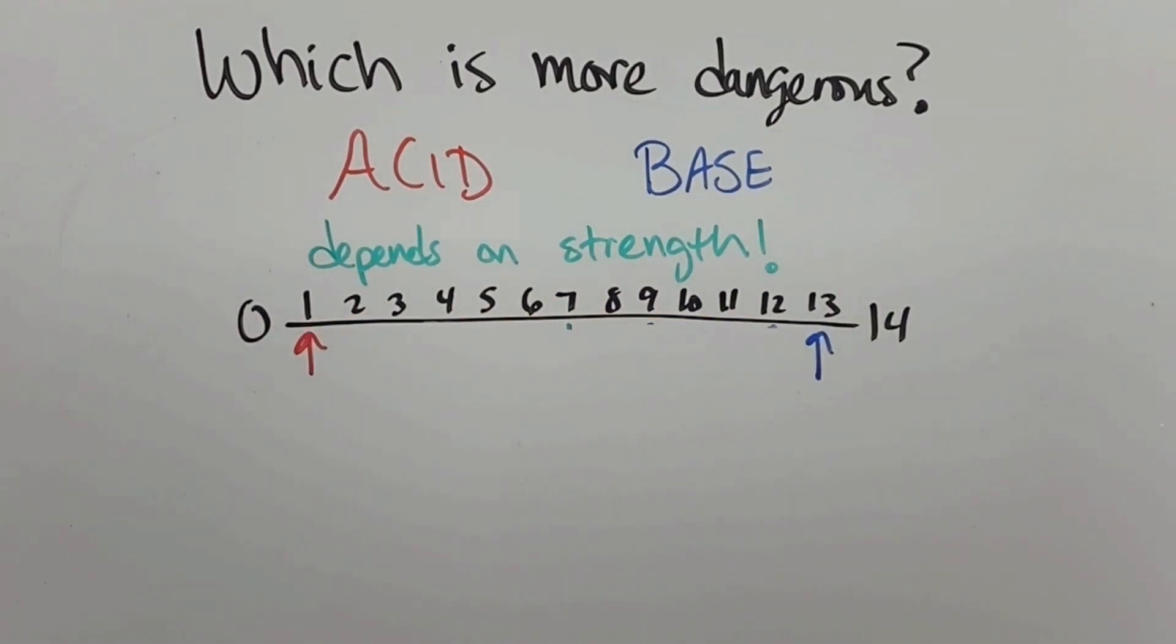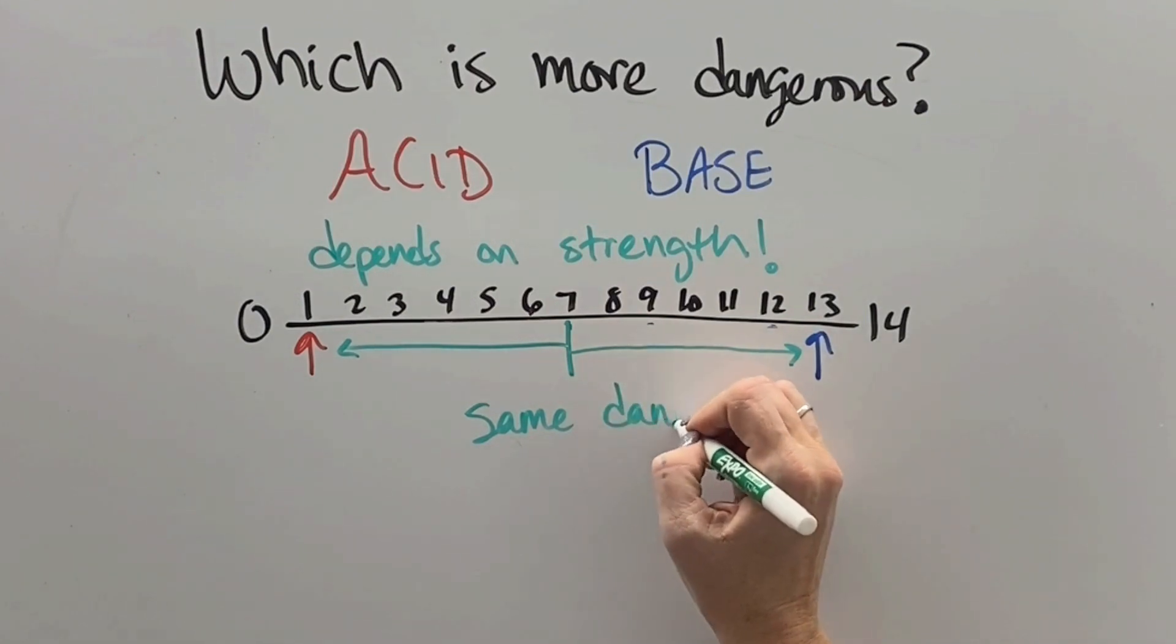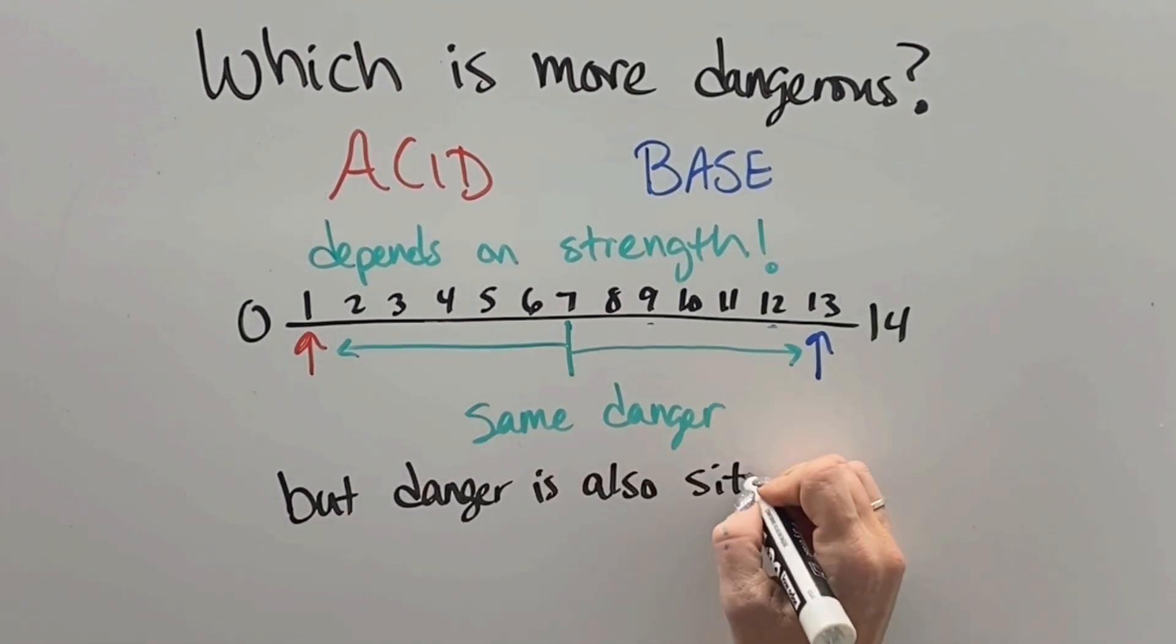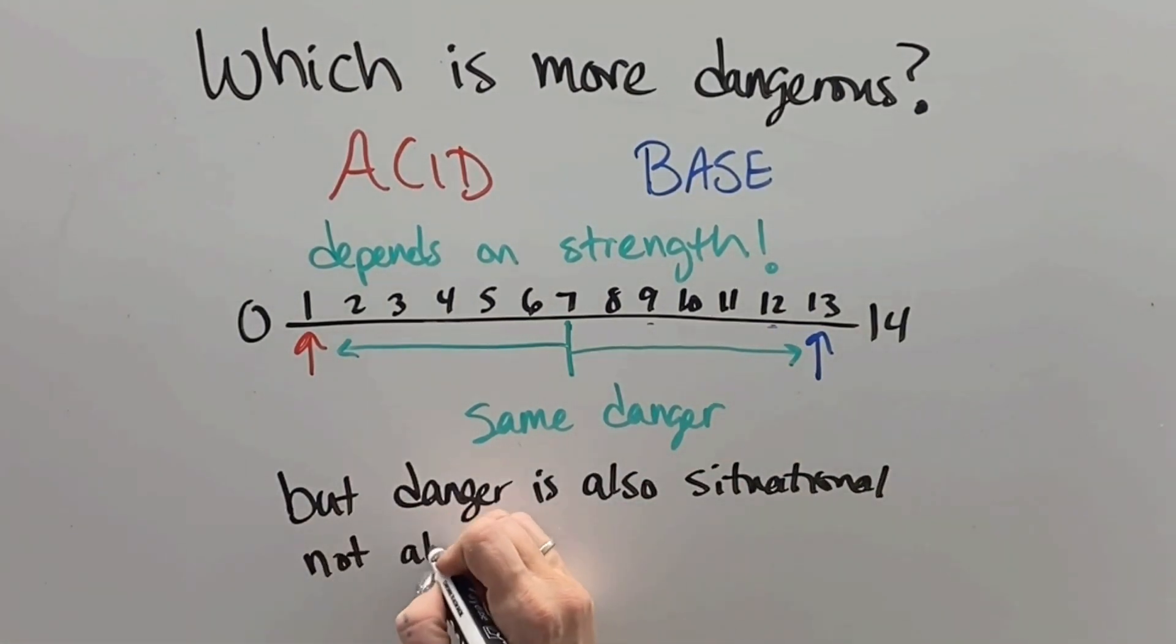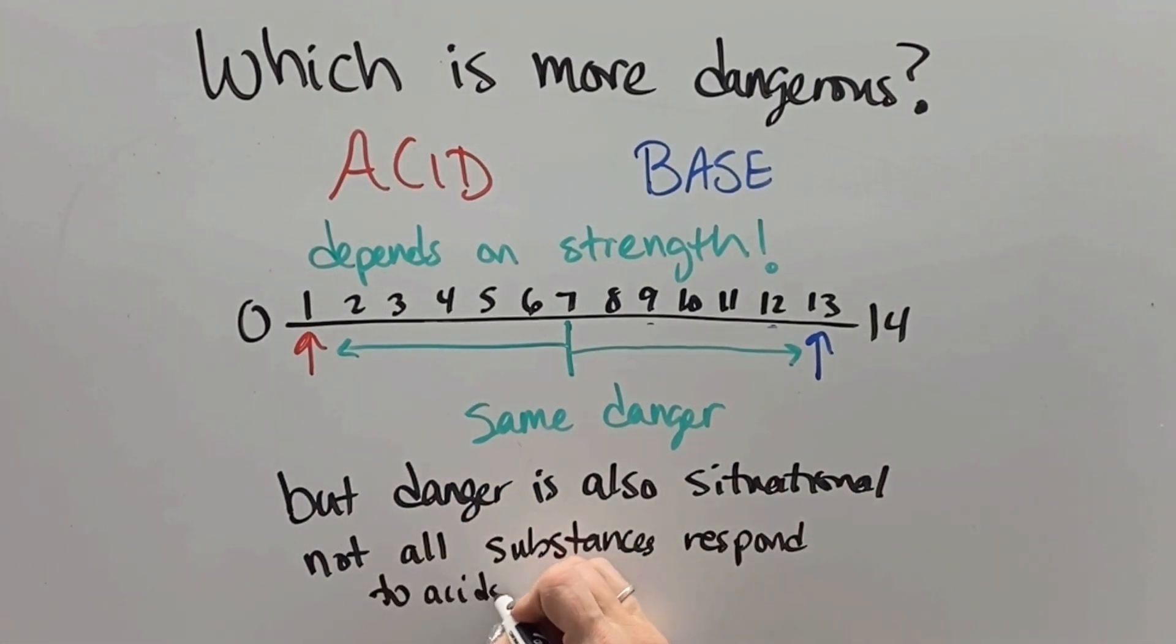And how about these guys? Well, they're both 6 steps away from neutral, so they're both the same level of danger. But keep in mind that substances behave and interact with different substances differently. And so just because something has a pH that's really far one way or the other isn't the only thing that would potentially make it a concerning substance to be dealing with.